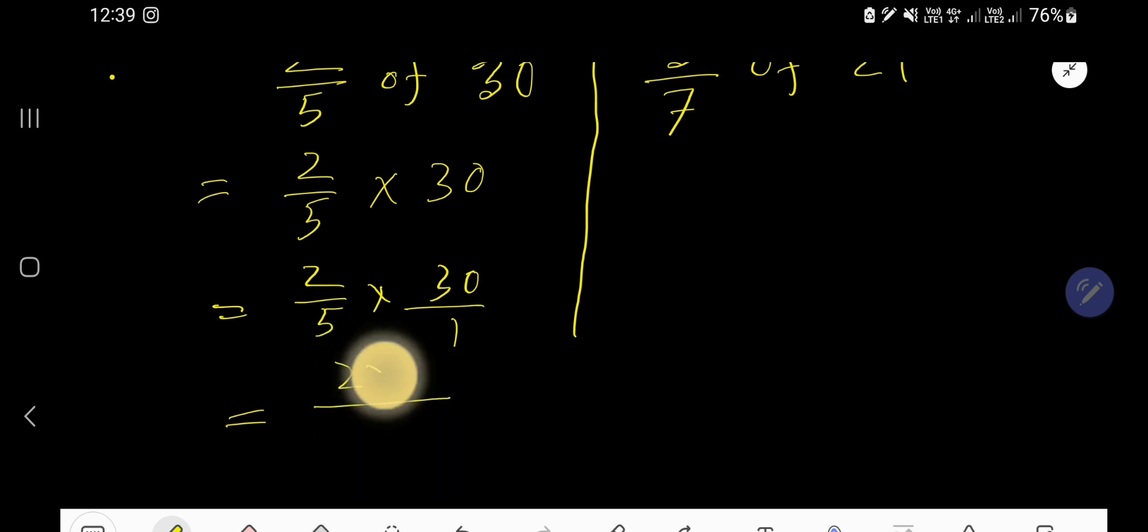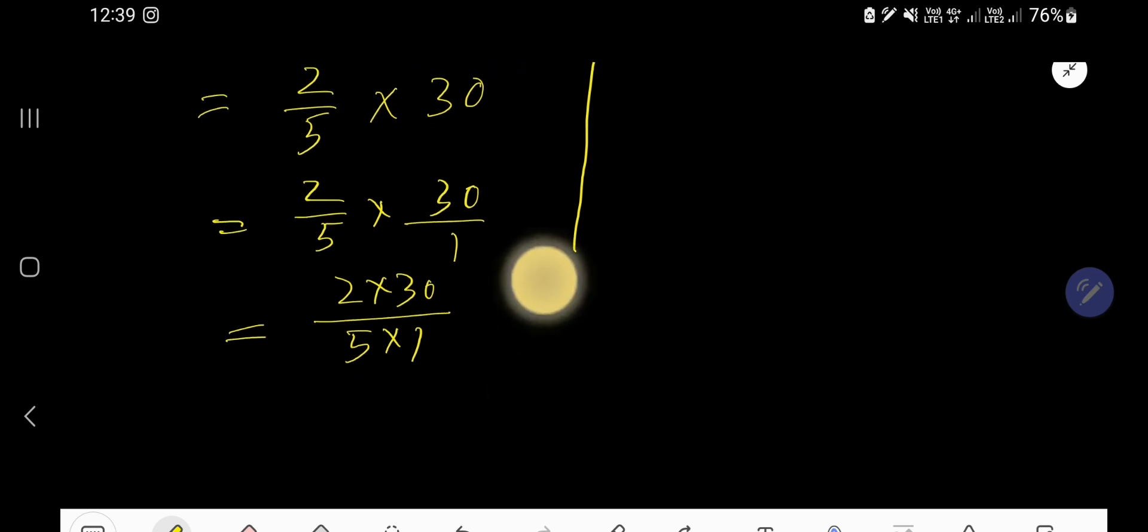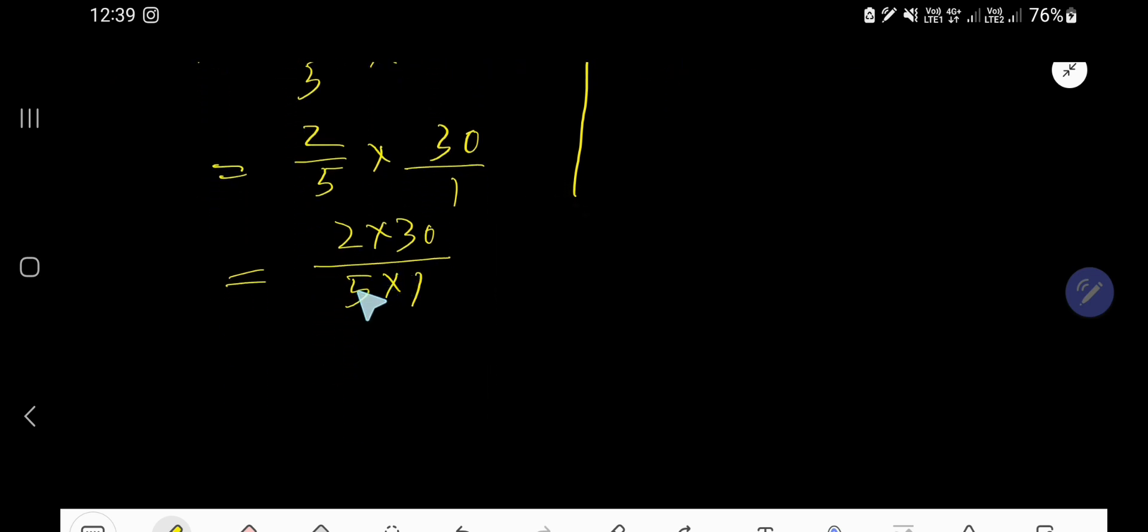Multiply top numbers and bottom numbers. Now you have this. So look, now divide this 5 by 5, you will get 1. If you divide this 30 by 5, you will get 6.